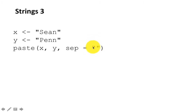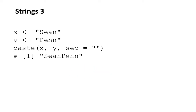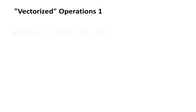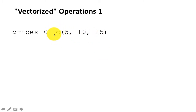If you don't want any separator, use sep='' (empty string with no space). Now we're going to look at one very important aspect of R: vectorized operations. I've created a vector called prices with values 5, 10, and 15, using the c() function which is short for concatenate.